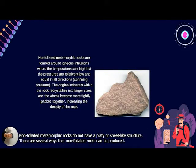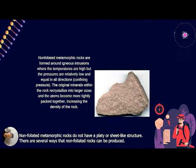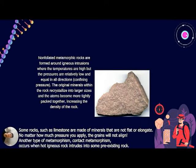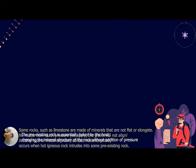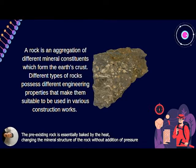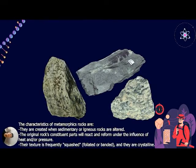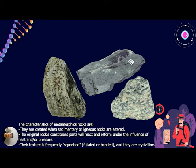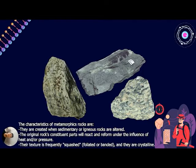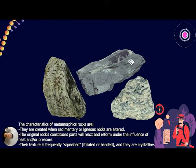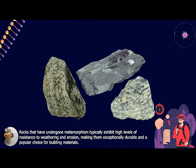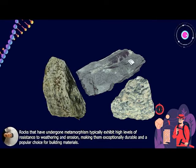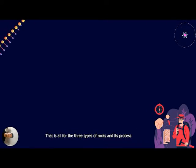Non-foliated metamorphic rocks do not have a sheet-like structure. Some rocks, such as limestone, have minerals that are not flat or elongated — no matter how much pressure is applied, they will not align. Another type is contact metamorphism, which occurs when hot intrusive rocks intrude into pre-existing rock. The pre-existing rock is essentially baked by the heat, changing the mineral structure without the addition of pressure. The characteristics of metamorphic rocks are: they are created when sedimentary or igneous rocks are subjected to heat and pressure; the texture is frequently foliated or banded; they are crystalline; and they exhibit high resistance to weathering and erosion, making them popular building materials.